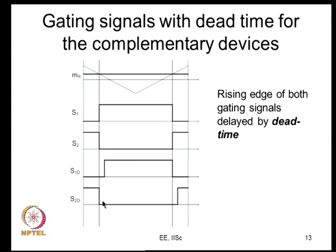You never want both top and bottom high - that is why there is dead time. During that interval when both gating signals are low, the load is an inductive load behaving like a current source, which will continue to conduct and demand a path for current flow. If both transistors cannot conduct, one of the diodes will have to conduct. Which diode conducts depends on the direction of current.